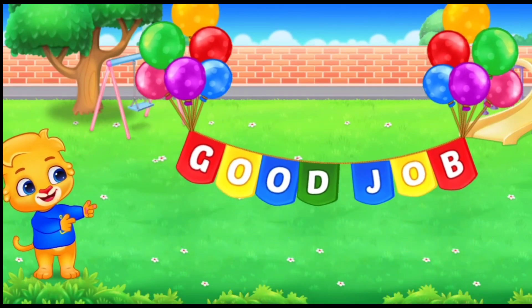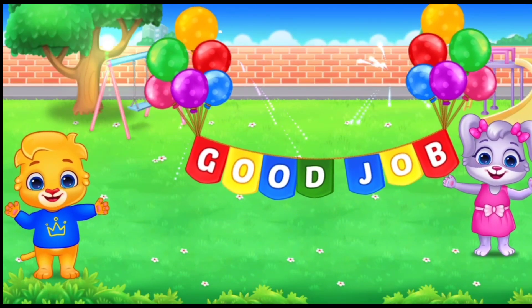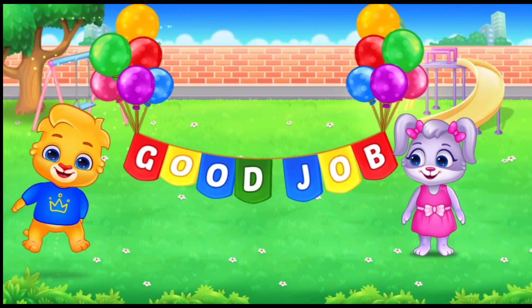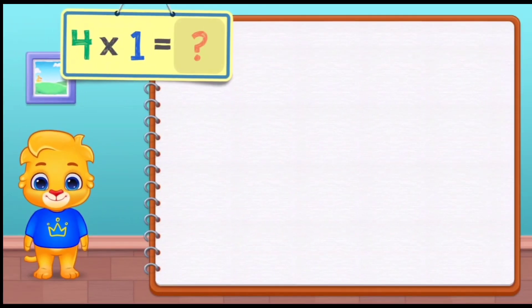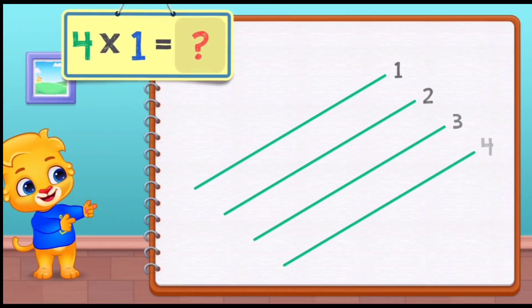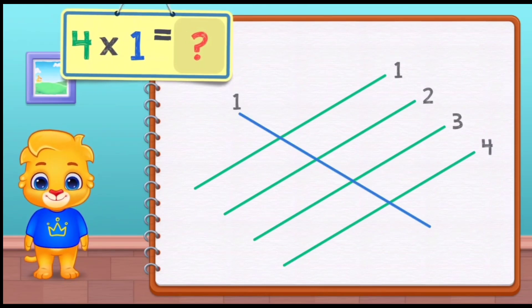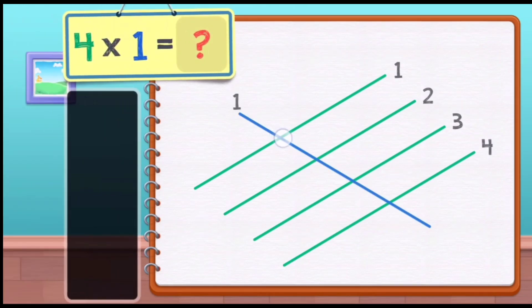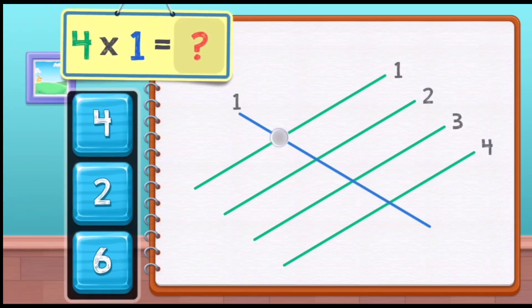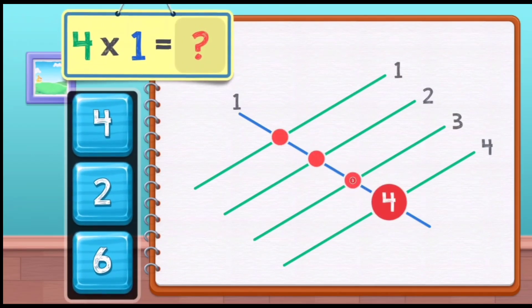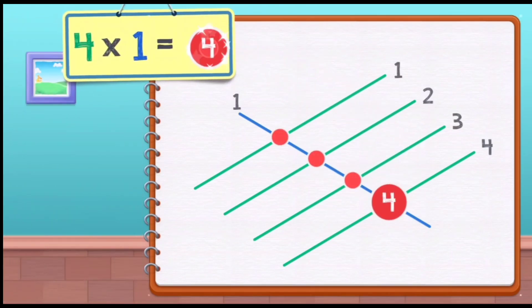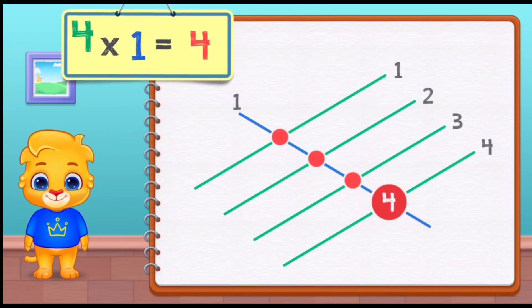Good job! Four times one equals four. One, two, three, four. Four times one equals four.